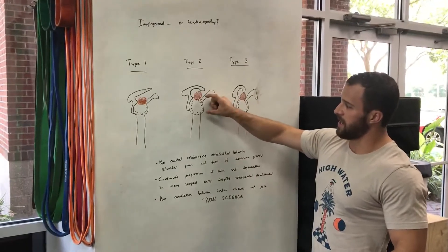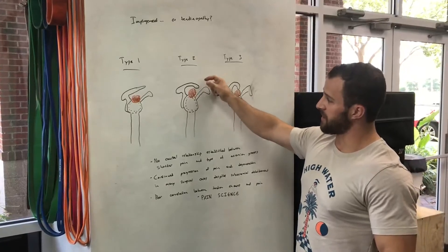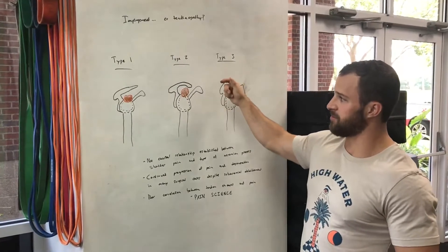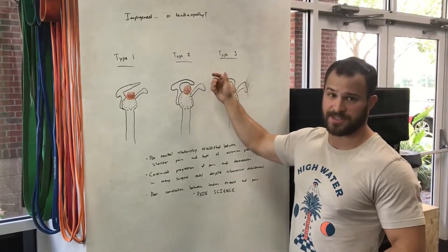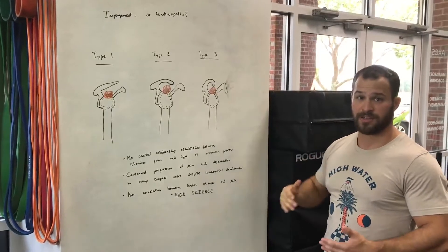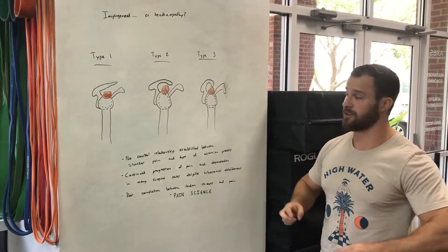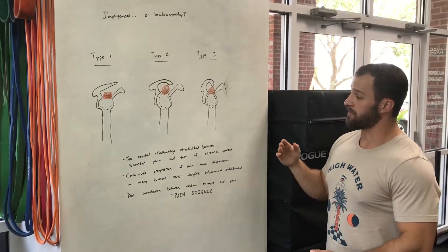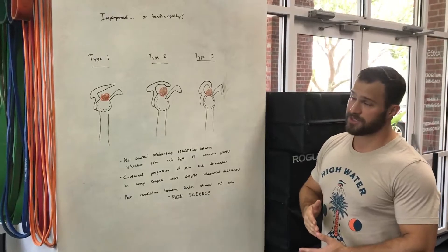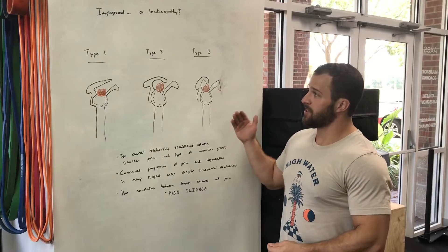If you look at your shoulder from the side, this is called a type 1 acromion process — it's kind of a straight line. Your supraspinatus is coming out this way, so this is looking at the arm from the side. You can move your shoulder blade up and down, you can move your arm up and down, and there's not a lot of stuff that your supraspinatus can bump into right there.